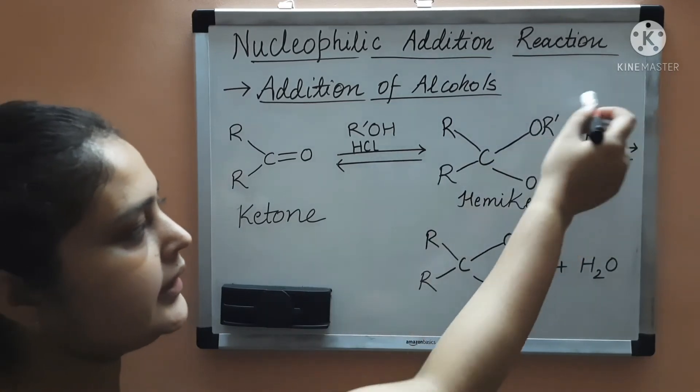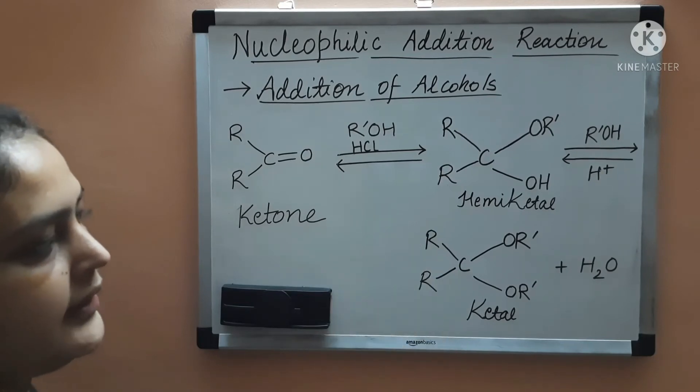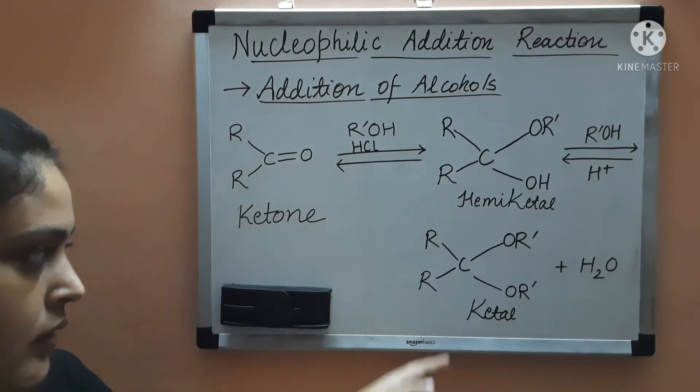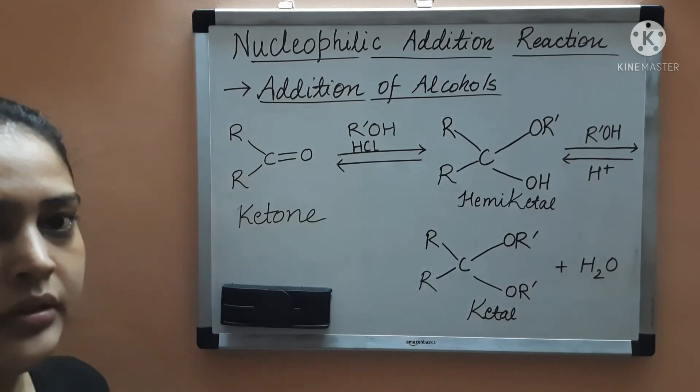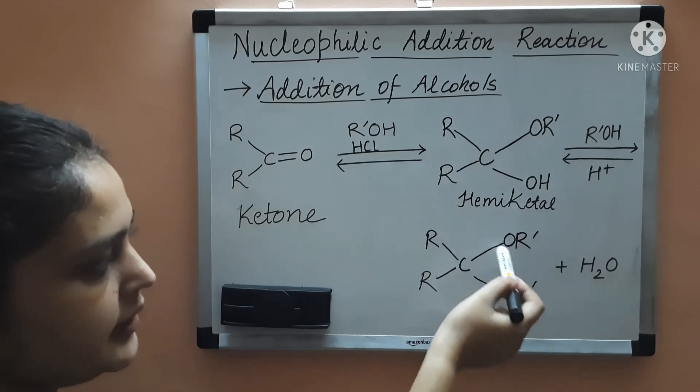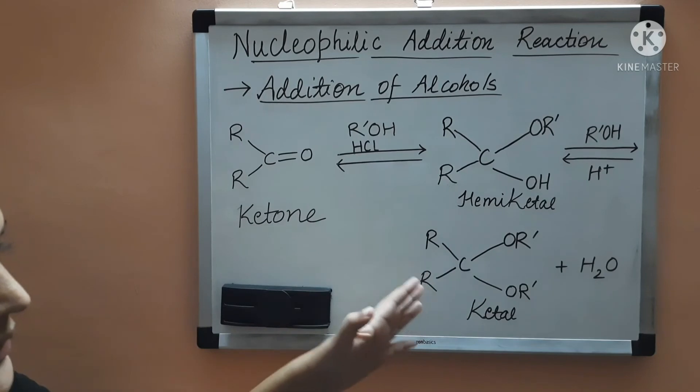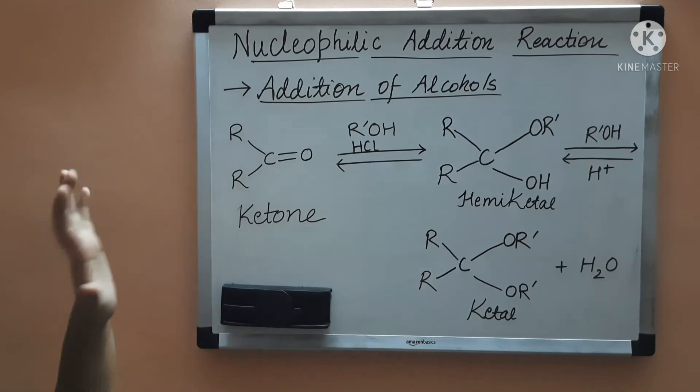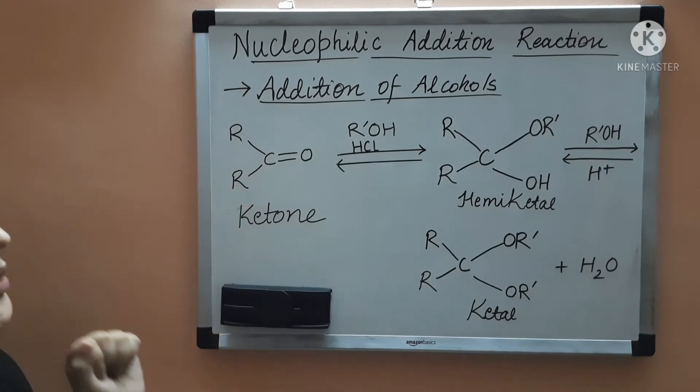Then again you are adding one more alcohol molecule, then you will get ketal now because here there is alkyl group instead of hydrogen atom and this is dialkoxy again because there are two alkoxy groups on the carbon atom. So this is ketal. So this was the addition of alcohols to carbonyl compounds.